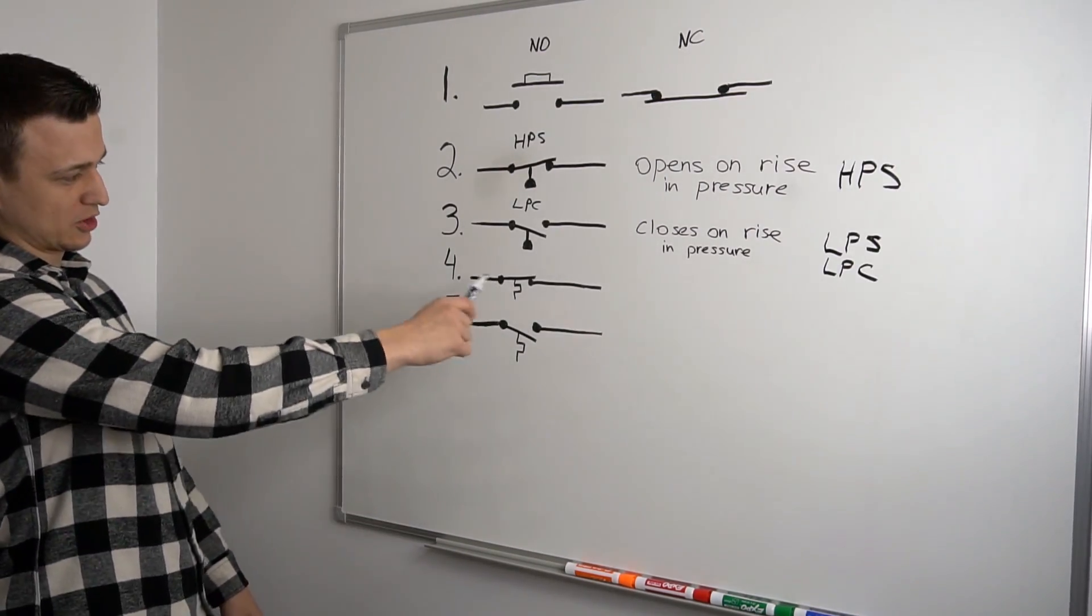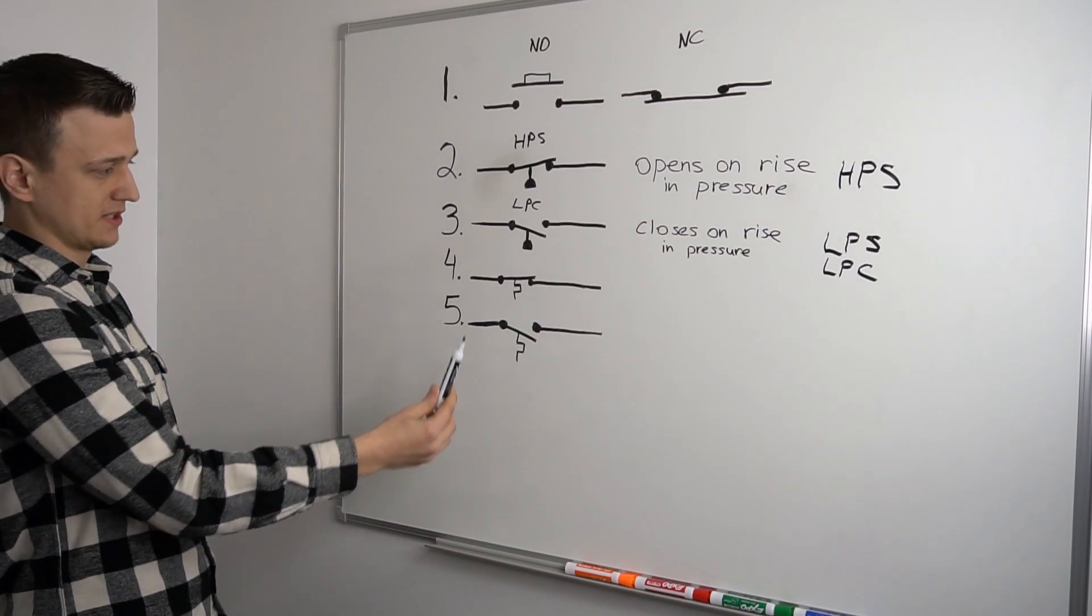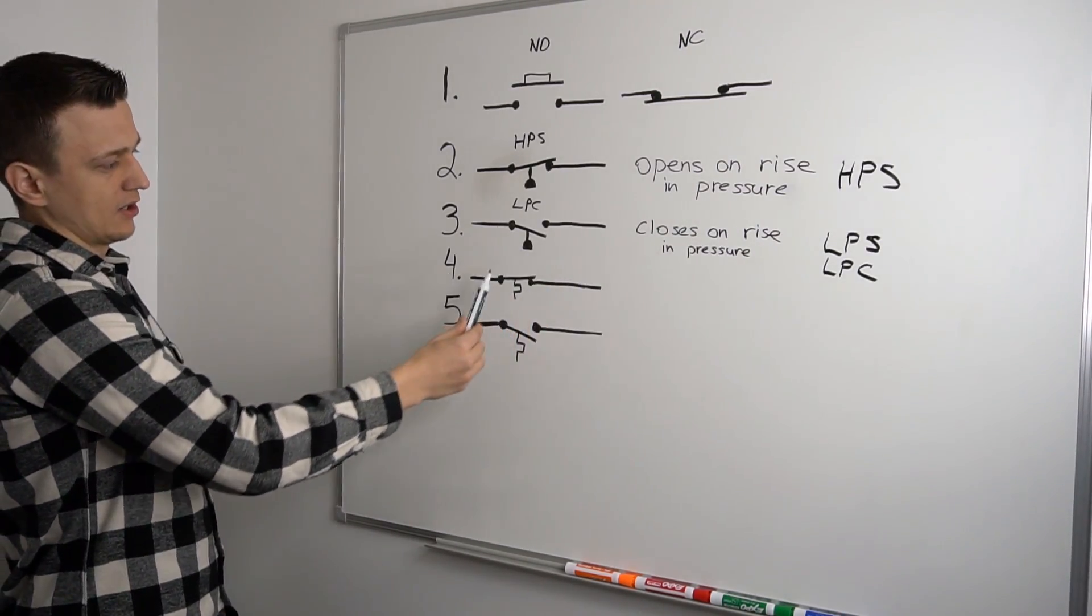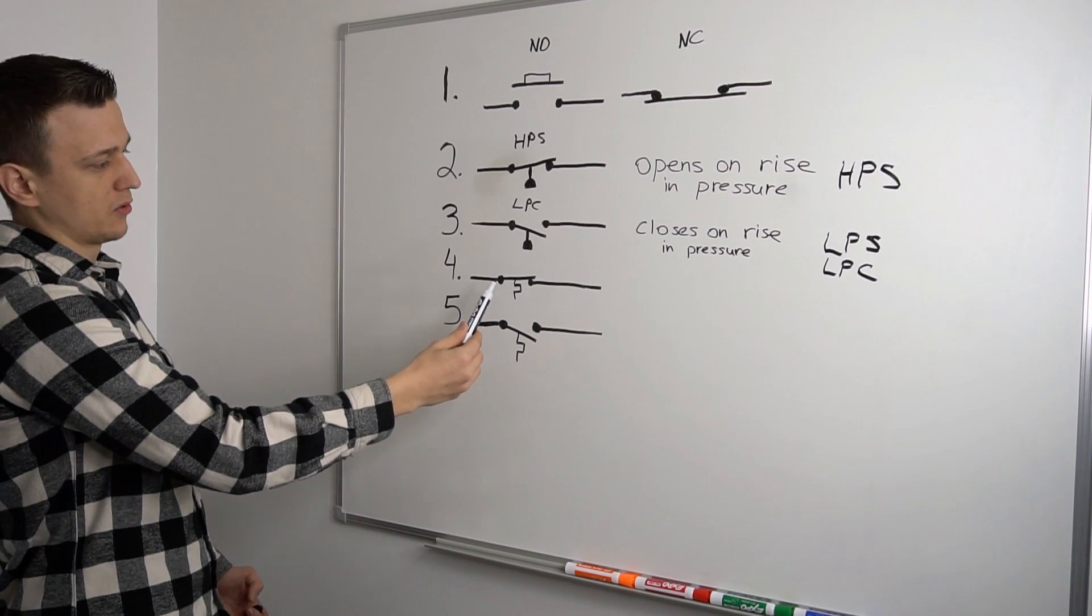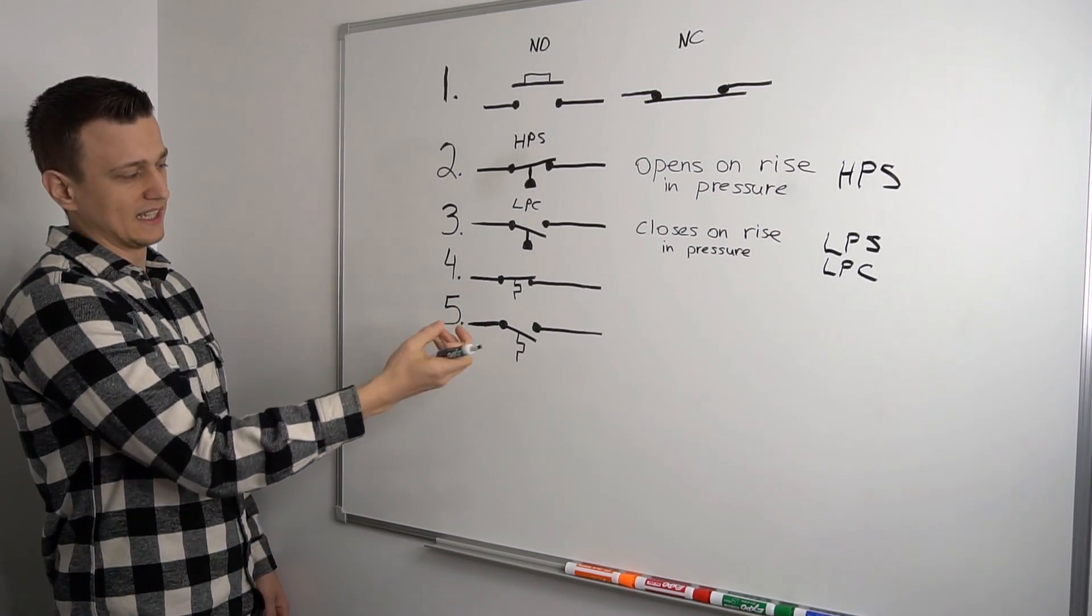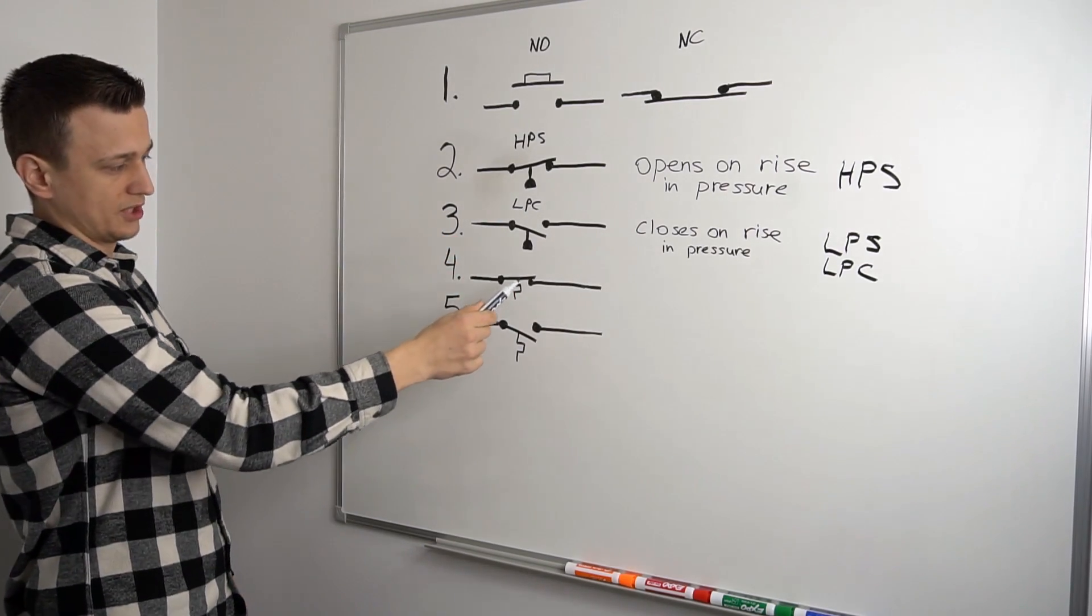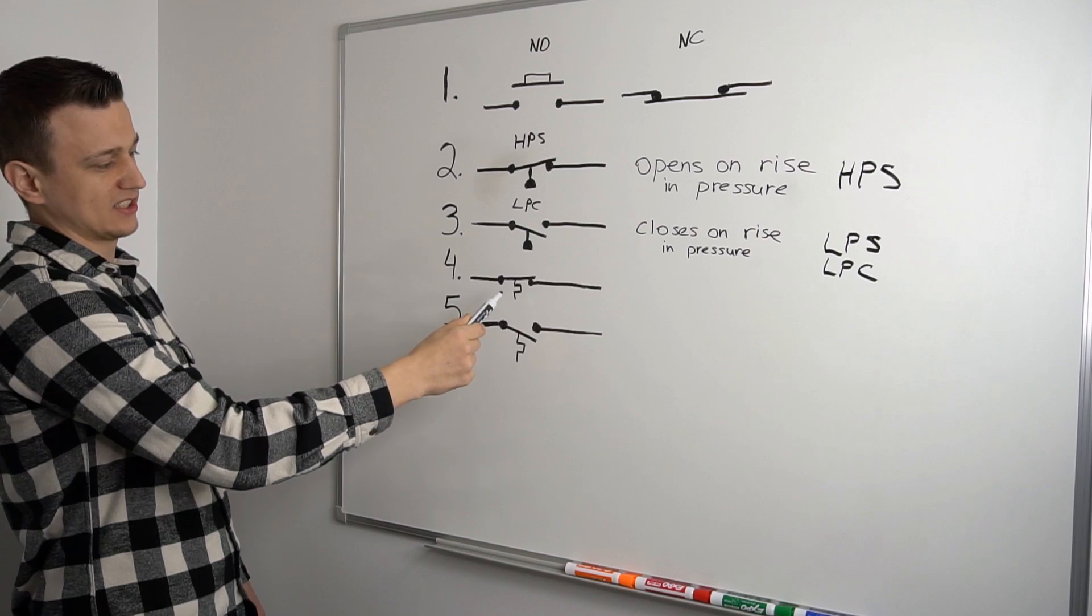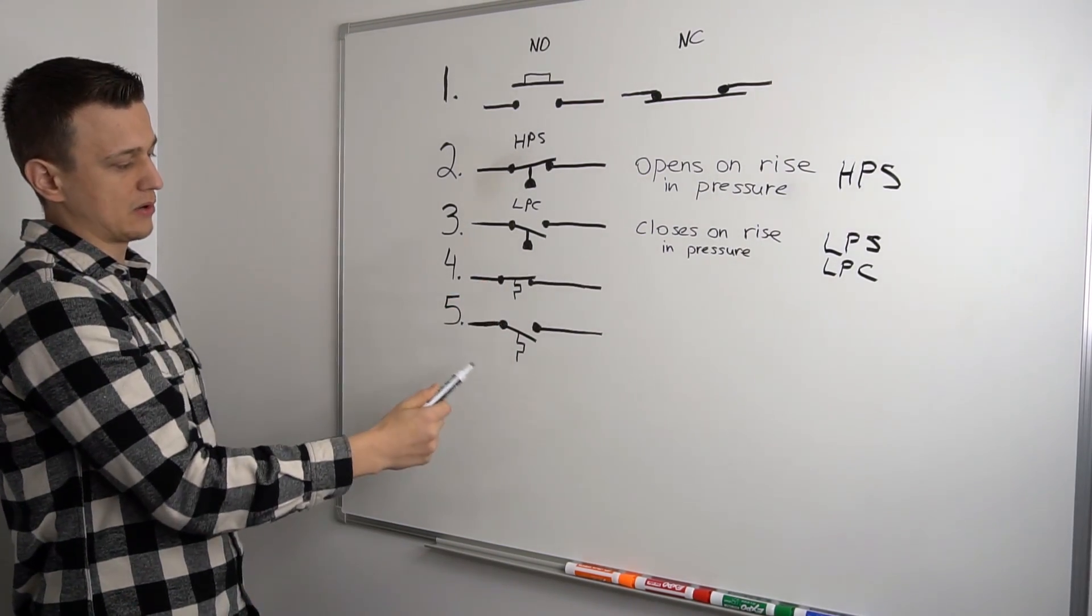And moving on to our next two switches, we have thermostat switches or basically heat switches. This one right here opens if the temperature gets hotter. So there's a sensor or usually it's a bimetal or a snap disk. If that thing heats up enough, it'll open up and interrupt the circuit.